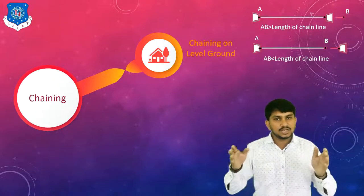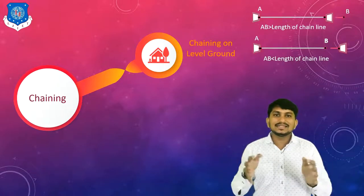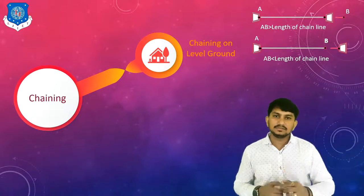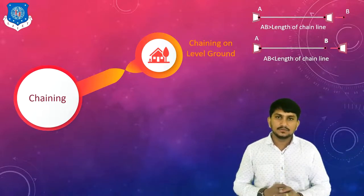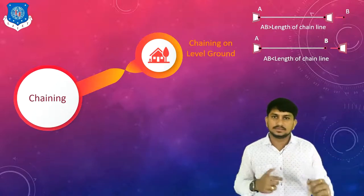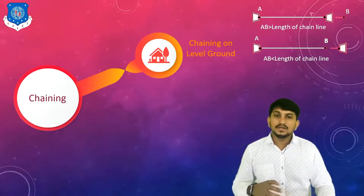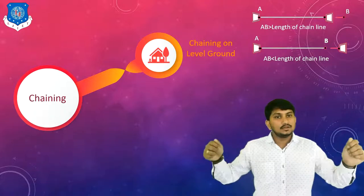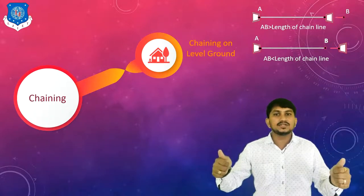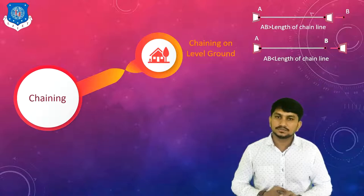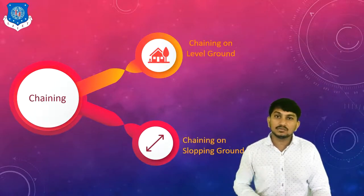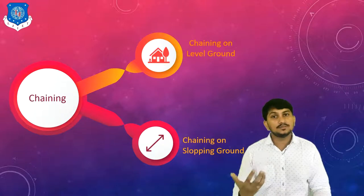If the length of the chain is less than the actual distance between two stations, arrows can be used for counting the number of chains. If the chain is long enough to measure the distance between two stations, arrows are not used.